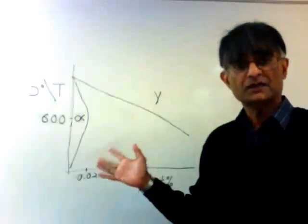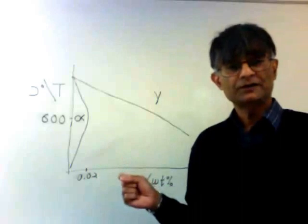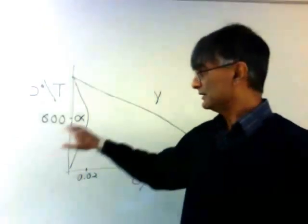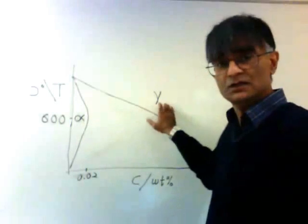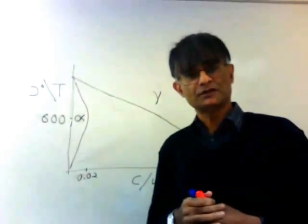This is the iron-carbon phase diagram representing the equilibrium between alpha, which is body-centered cubic ferrite, and gamma, which is face-centered cubic austenite.